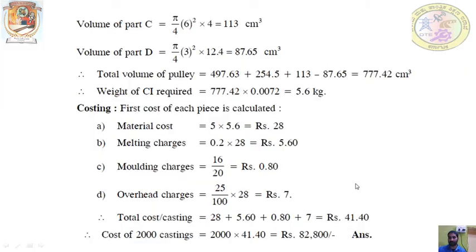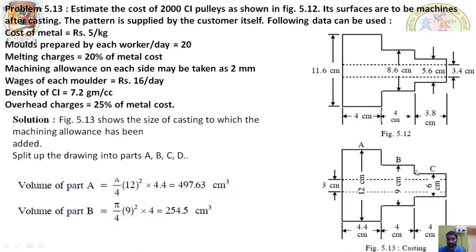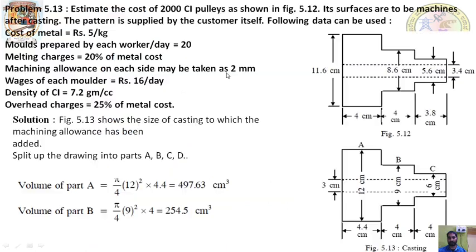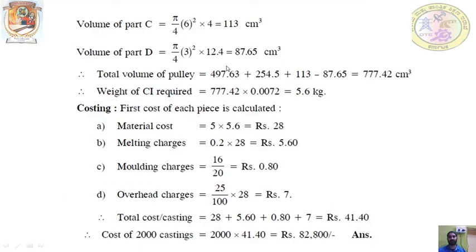The final component is split into simple geometries — four parts: A, B, C, and hole D. Volume of A: solid cylinder, diameter 12 cm, length 4.4 cm → π×12²/4 × 4.4 = 497.63 cc. Volume of B: π×9²/4 × 4 cc. Volume of C: π×6²/4 × 4 cc. Volume of D (hollow hole): π×3²/4 × 12.4 cc, deducted since it is a hole. Total volume = A + B + C − D = 772.42 cc.